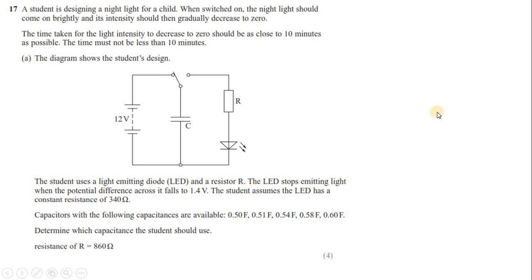Question number 17. A student is designing a night light for a child. When switched on, the night light should come on brightly and its intensity should then gradually decrease to zero. The time taken for the light intensity to decrease to zero should be as close to 10 minutes as possible. The design shows a capacitor, LED, resistor, and 12-volt power supply. The LED stops emitting light when the potential difference across it falls to 1.4 volts, with a constant resistance of 340 ohms. Determine which capacitance the student should use.